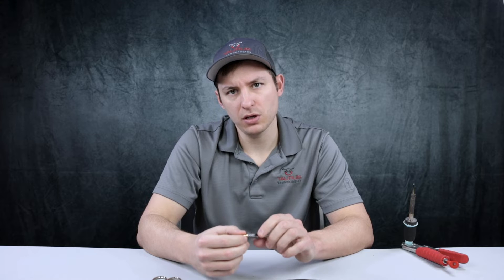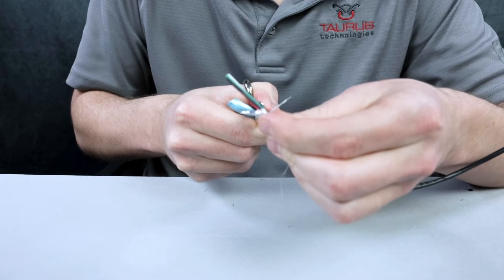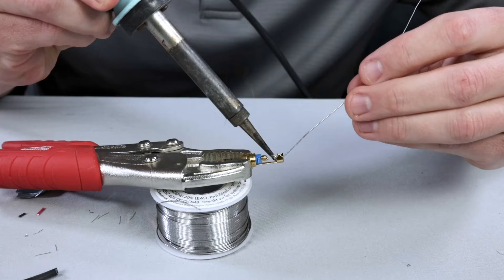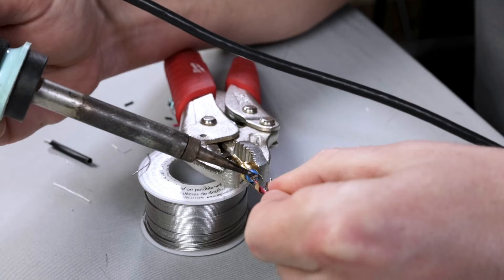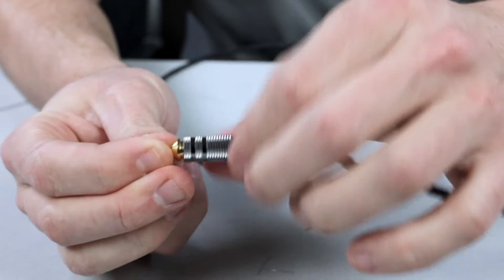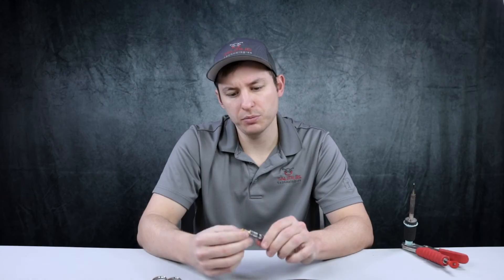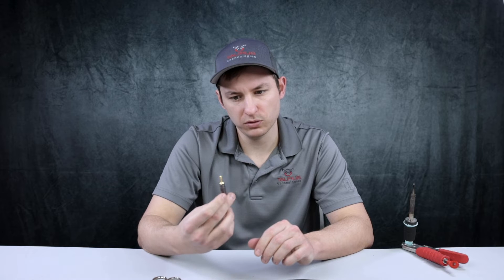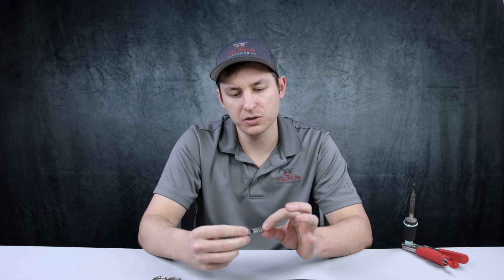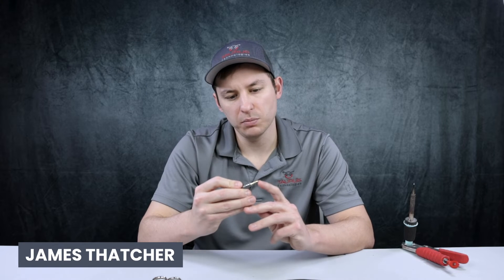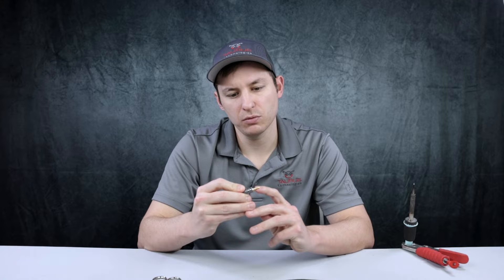Another one that we see a lot is a RCA. The primary difference between this specific 3.5 and an RCA is that there are two audio channels on this connector. You typically have a positive tip, a positive ring,